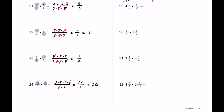For number 29, we have 4 and 1 fifth multiplied by 5 fourteenths. We convert 4 and 1 fifth: 4 times 5 plus 1 is 21 over 5. So we multiply 21 over 5 by 5 over 14. 21 breaks into 3 times 7, and 14 breaks into 2 times 7. The 5s cancel and the 7s cancel, leaving 3 on top and 2 on bottom — 3 halves, or 1 and 1 half as a mixed number.